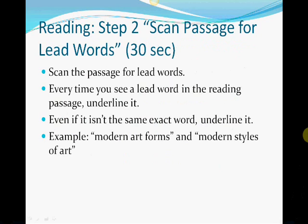The second step is to scan the passage for lead words. Anytime you see a lead word that you underlined in the answer choices, underline it in the reading passage. Even if it isn't the same exact word, you want to underline it. For example, 'modern art forms' and 'modern styles of art' are not the same, but they're similar, so you want to underline that. Steps one and two together should take you about one minute.